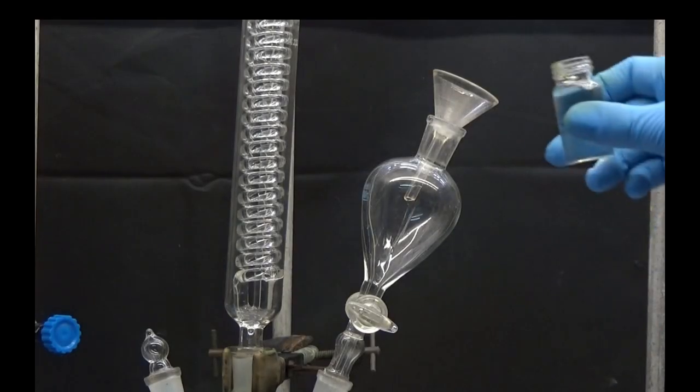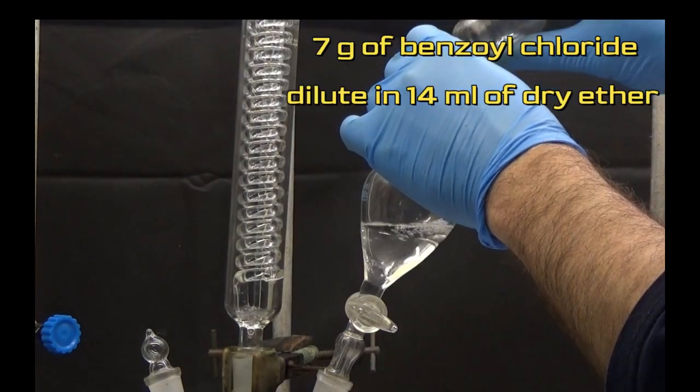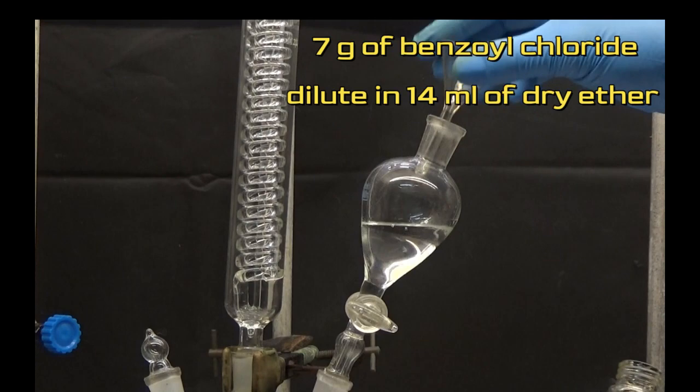Once the magnesium has completely dissolved, add 7 grams of benzoyl chloride with 14 milliliters of dry ether in 10 minutes.